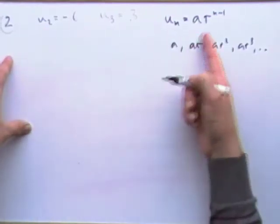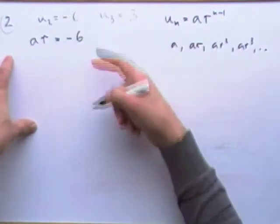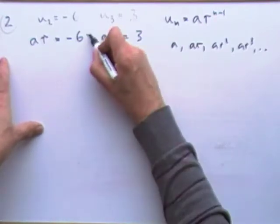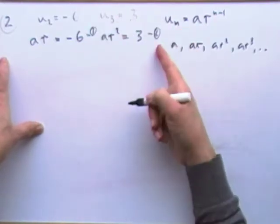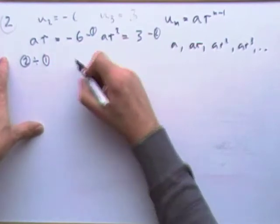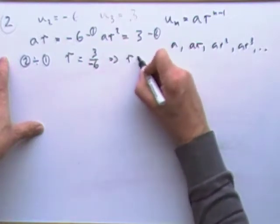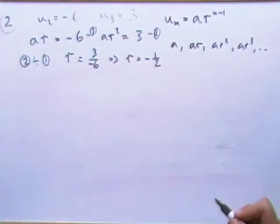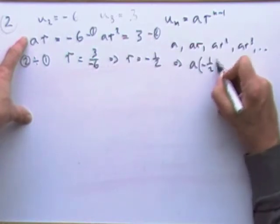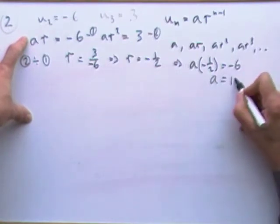So that means I can replace that. U2 would have to be a times r to the power 1, so it's just a times r is negative 6. And u3 means a times r squared is 3. So you've got a pair of simultaneous equations. Dividing them, if you do 2 divided by 1, would cancel out the a's and leave you with r squared over r, which would be r. And that would be 3 over negative 6, which means that r is negative 1 half.